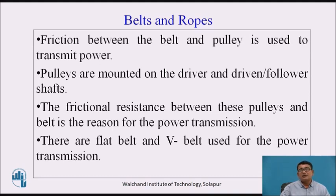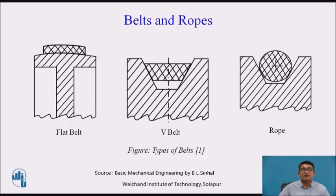Basically, there are two types of belts: flat belt, V-belt, and sometimes circular type — cord type belts — used for the power transmission system. These are some diagrams I am showing here. It is a flat belt type, showing the belt and the pulley section.